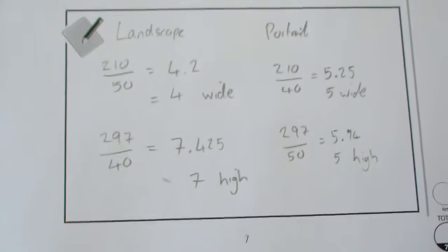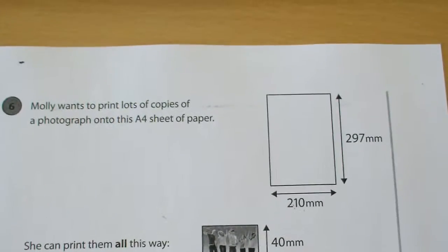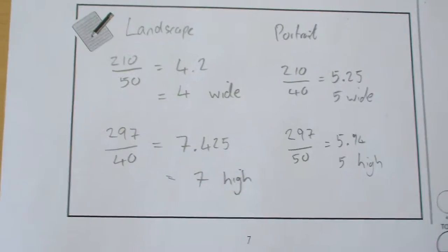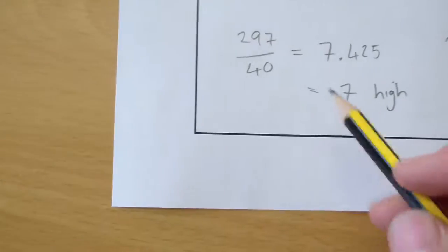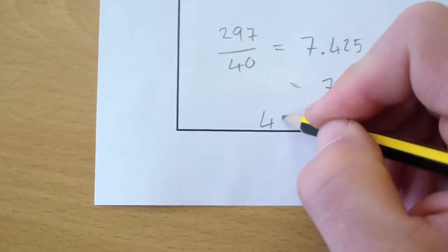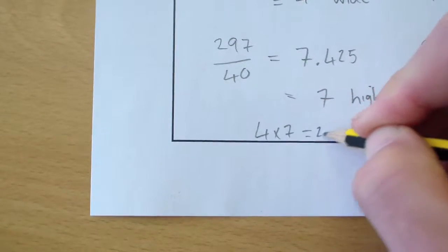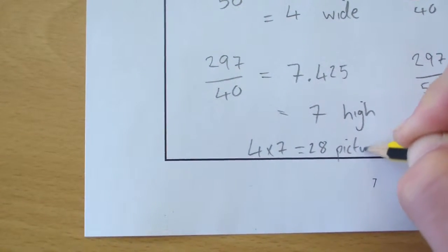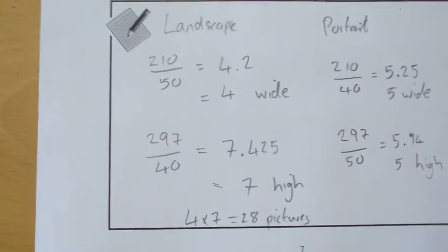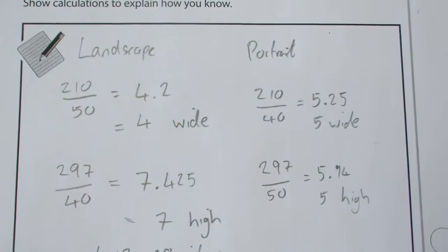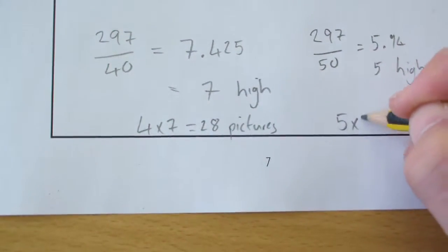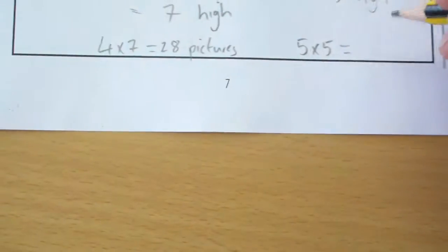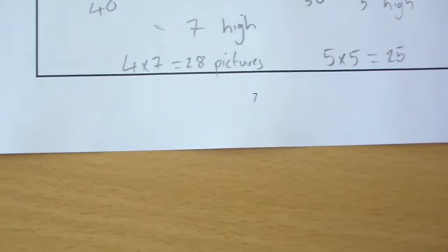So we've calculated how many will go across each of the dimensions. The last thing to calculate is which one is going to fit on more. So if we've got 4 wide and 7 high, if we times those together, we get 28 pictures to fit onto the page. If we place them portrait, 5 wide, 5 high, we only get 25 pictures.